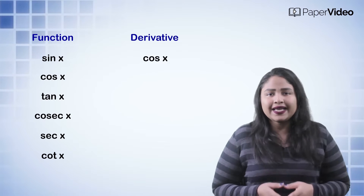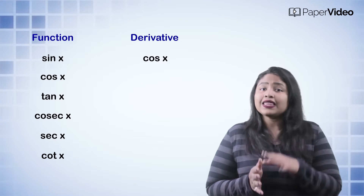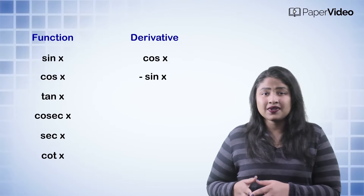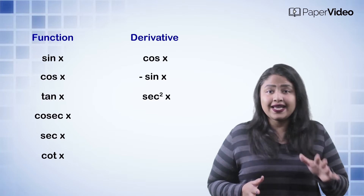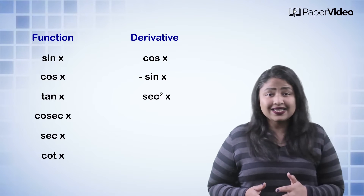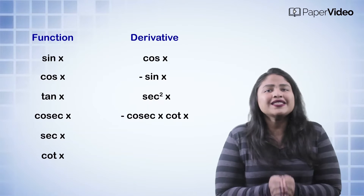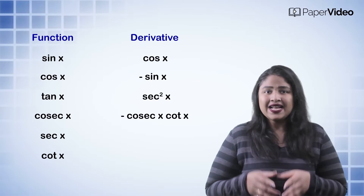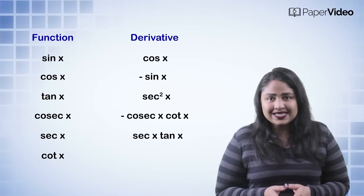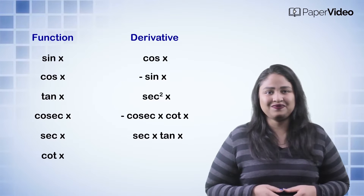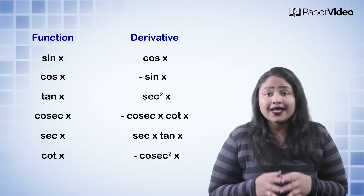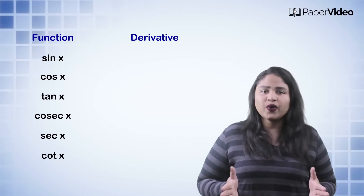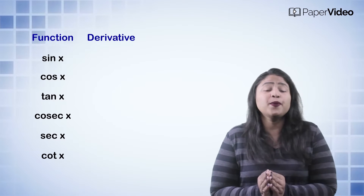The derivative of sin x is cos x. The derivative of cos x is minus sin x. The derivative of tan x is sec squared x. The derivative of cosec x is minus cosec x cot x. The derivative of sec x is sec x tan x. The derivative of cot x is minus cosec squared x.